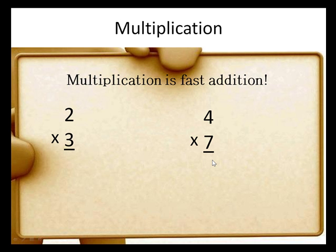Multiplication is just fast addition. And let me show you what that means. If I have 2 times 3, that actually means I'm going to add 3 twice. I'm going to take 3, 2 times. 3 plus 3 is 6. So 2 times 3 is also 6.